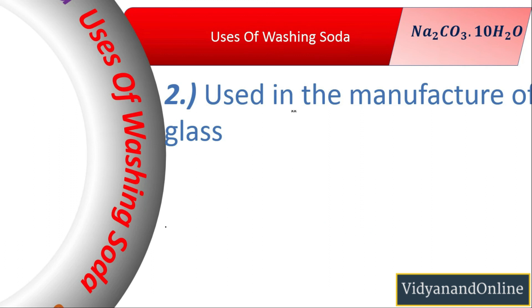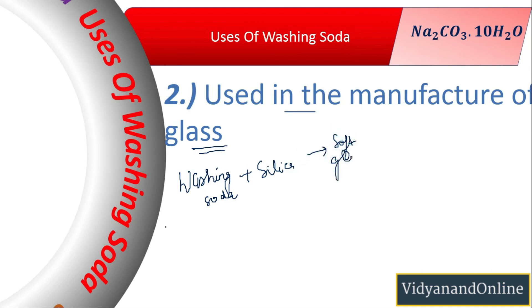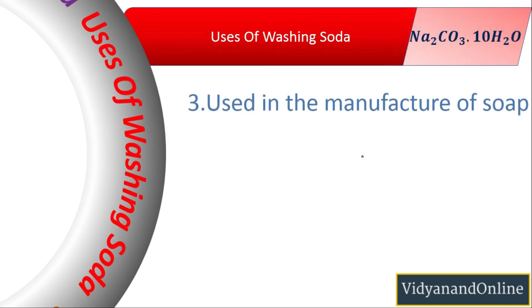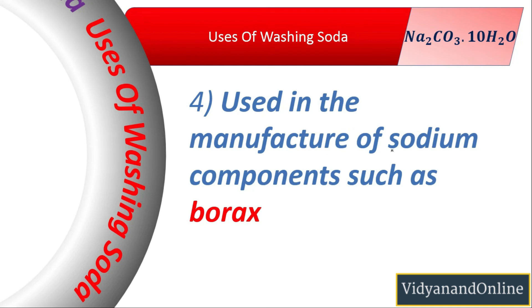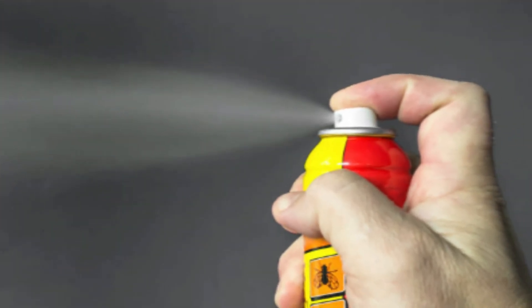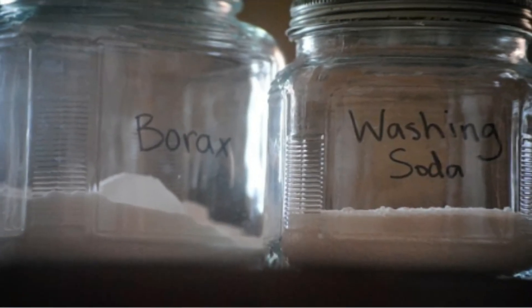Second, washing soda is used in the manufacture of glass — it is one of the most important ingredients in the glass industry. When mixed with silica, it produces soft glass. Third, it is used in the manufacture of soap and detergents, since washing soda can make oil and grease soluble in water. Fourth, it is used in the manufacture of sodium compounds such as borax — a compound used in medicines and to control pests like cockroaches and ants. Most sodium compounds are made from washing soda.